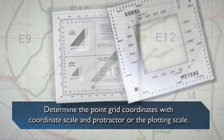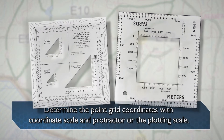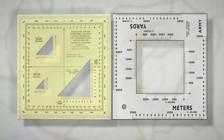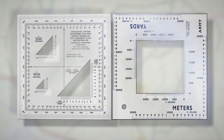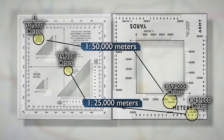To determine point-grid coordinates with a coordinate scale and protractor or plotting scale: the most accurate way to determine the coordinates of a point on a map is with a coordinate scale. You need not imagine lines because you can find the exact coordinates using the coordinate scale and protractor or plotting scale. Each device includes two coordinate scales, one to 25,000 and one to 50,000 meters. Make sure that regardless of which device you use, you choose the correct scale.